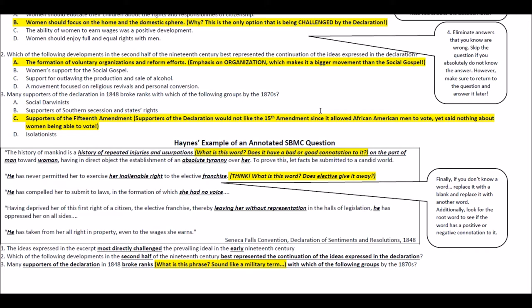You can see where I've underlined 'he, he, he' — what does that remind you of? Hopefully it should remind you a little bit of the Declaration of Independence. Also notice 'franchise' — that might be a word you're not familiar with. Does 'elective' give it away? If you leave it blank and come back, do you think you could figure out what it meant? Always look for the root word and whether it has a positive or negative connotation.